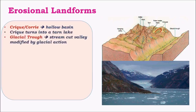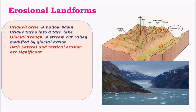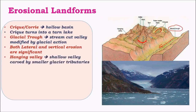The next one is the glacial trough, which is a valley formed due to both vertical erosion and lateral erosion. In glacial erosion, both lateral and vertical erosion play a significant role. Hence most of the valleys we see are U-shaped because of these combined vertical and lateral erosion processes.